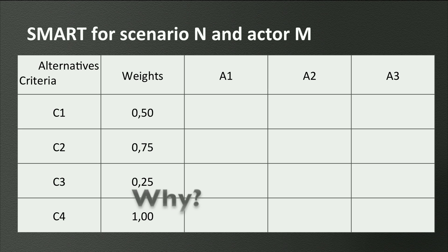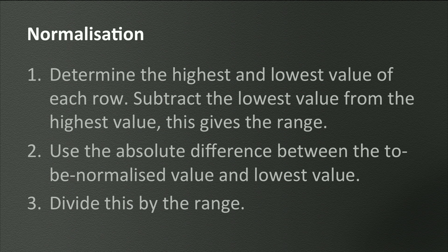Then, normalize the scores. This can be done in many different ways. We present normalization of scores into values between 0 and 1, with 0 being the worst and 1 being the best. There are three steps. The first is to determine for every criterion what the highest and lowest value is for all alternatives — seek the highest and the lowest value in each row. Then, subtract the lowest value from the highest value. This gives you the scoring range for every criterion, so you have a scoring range for every row.